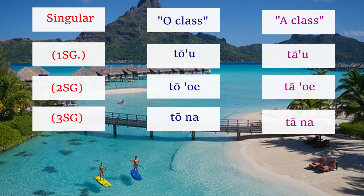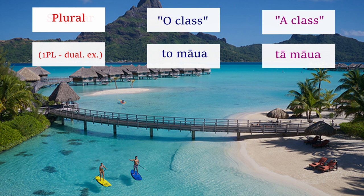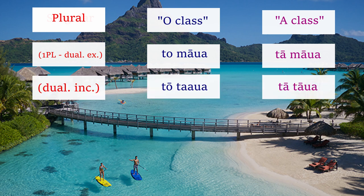In the third person singular form — which is like he, she, or it — you have to'na in the O form, and ta'na in the A form. The pronoun system is a little bit complex. The first person plural dual exclusive — which would be like saying 'me and him, but without you' — you would say to-maua for the O class and ta-maua for the A class. In the first person dual inclusive form — like saying 'me and you' — you say to-ta'ua in the O form and ta-ta'ua in the A form.